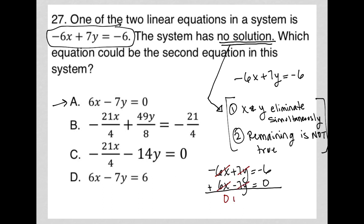Negative 6x plus 6x is 0. 7y minus 7y is 0. And negative 6 plus 0 is negative 6, leading me to 0 equals negative 6, which is not true.